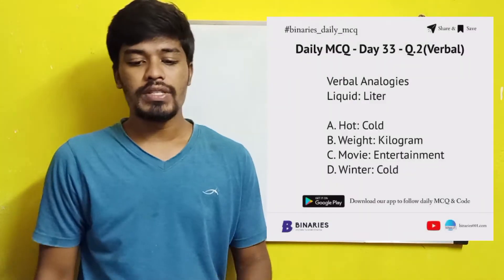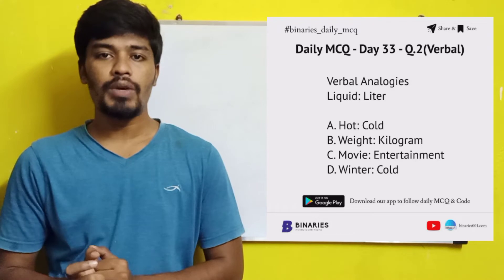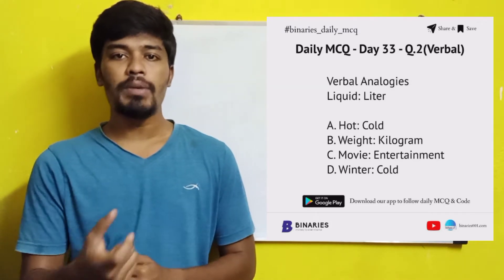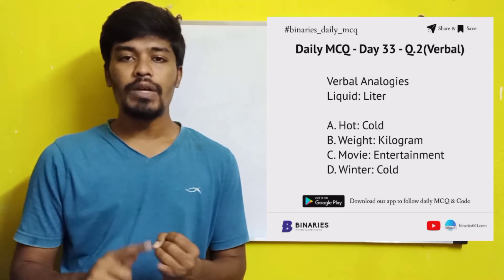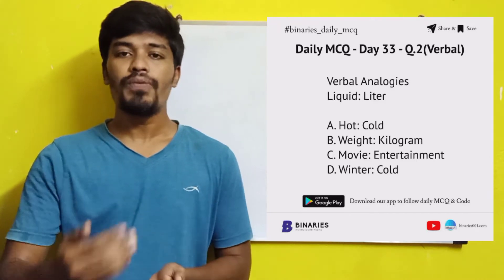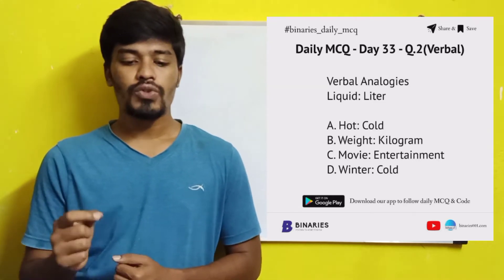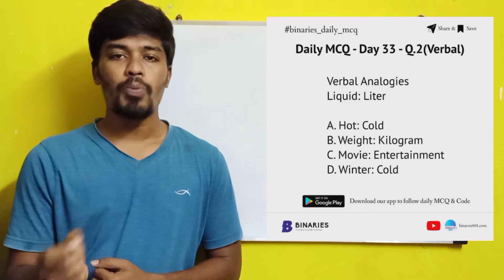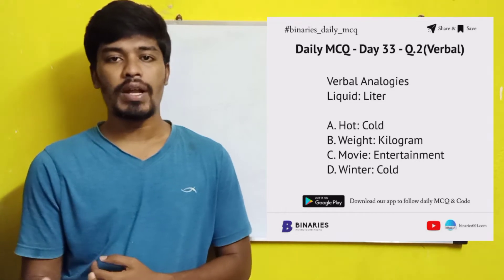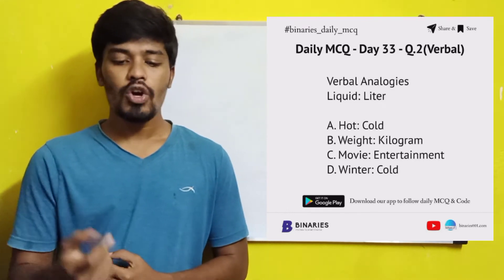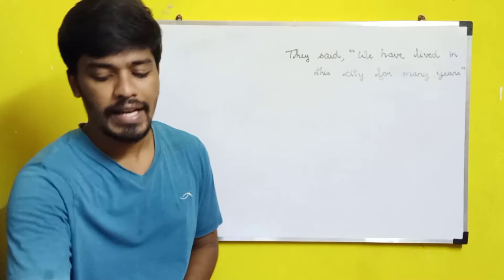The second question is verbal analogies. The given combination is "liquid : litter" — we measure liquid in litres. From the given options, we have to identify the similar kind of word pair. Option A is "hot and cold", which is an opposite pair. Option B is "weight : kilogram" — we measure weight in kilograms. Option C is "movie : entertainment" and option D is "winter : cold". So option B is the correct answer for the second question.